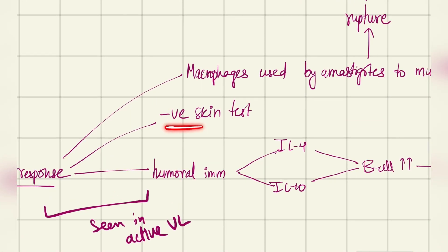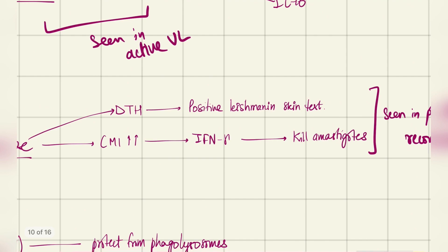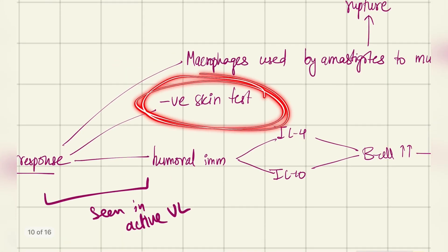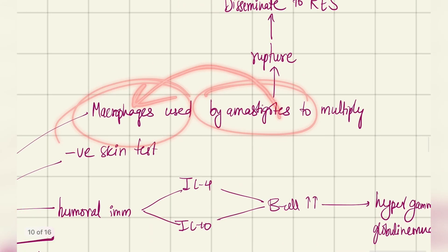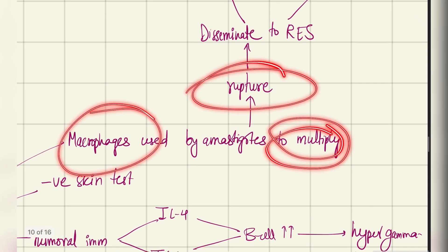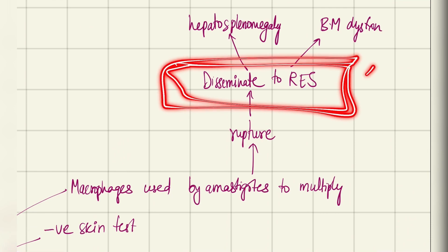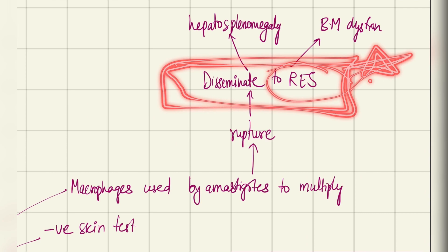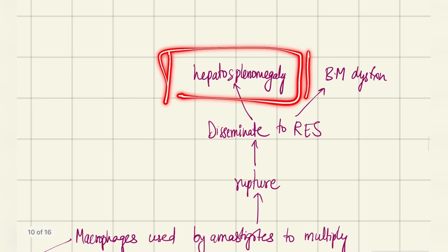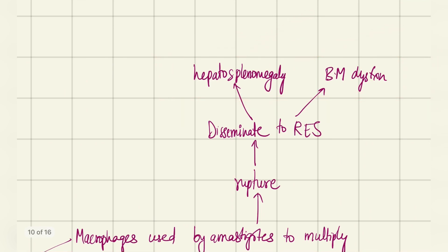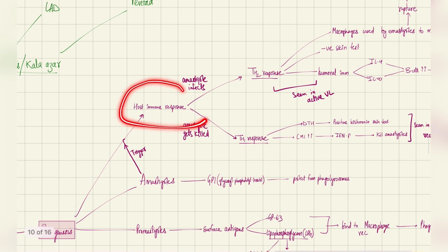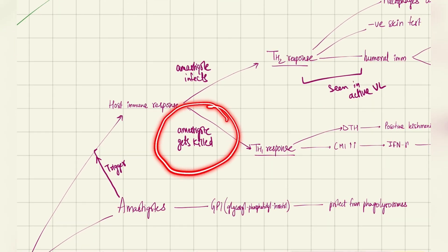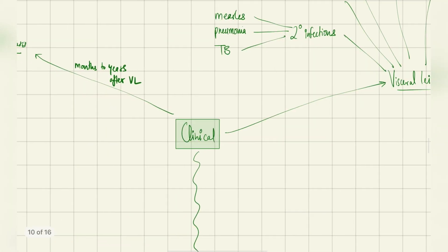In active visceral leishmaniasis (Th2 response), there is also a negative Leishmanin skin test because there is no delayed-type hypersensitivity reaction and no cell-mediated immunity. The amastigotes use macrophages to multiply, rupture the macrophage, disseminate into the reticuloendothelial system, and cause classical hepatosplenomegaly and bone marrow dysfunction — two important manifestations. This completes the pathogenesis.